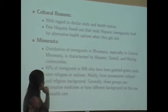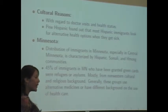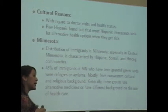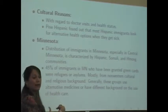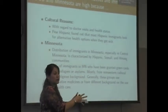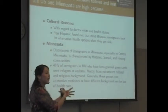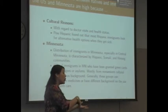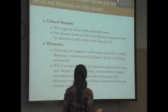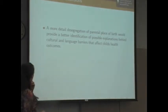45% of immigrants in Minnesota who have been granted a green card are also refugees and asylum seekers, so they're a very different group. They may have some rights as citizens that the general U.S. immigrant population does not have. Most of the general immigrant population in the U.S. tend to be non-citizens without the rights of a citizen for the use of different services.